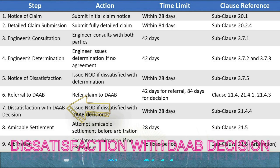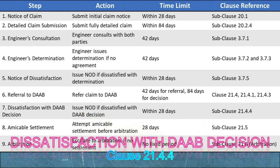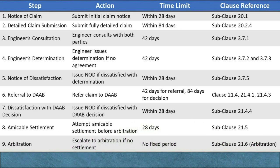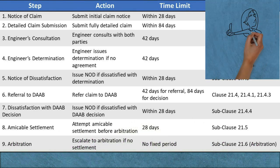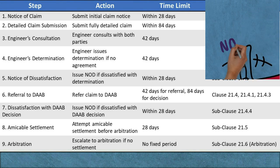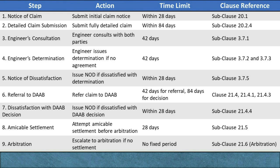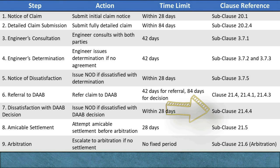Step 7: Dissatisfaction with DAAB's Decision (Subclause 21.4.4). Action: If either party is dissatisfied with the DAAB's decision, they may issue another Notice of Dissatisfaction with the DAAB decision. This notice must clearly state that it is a notice of dissatisfaction with the DAAB's decision, along with reasons for the dissatisfaction. Time limit: This notice must be issued within 28 days of receiving the DAAB's decision. If no Notice of Dissatisfaction is issued within this 28-day period, the DAAB's decision becomes final and binding. Clause Reference: Subclause 21.4.4.